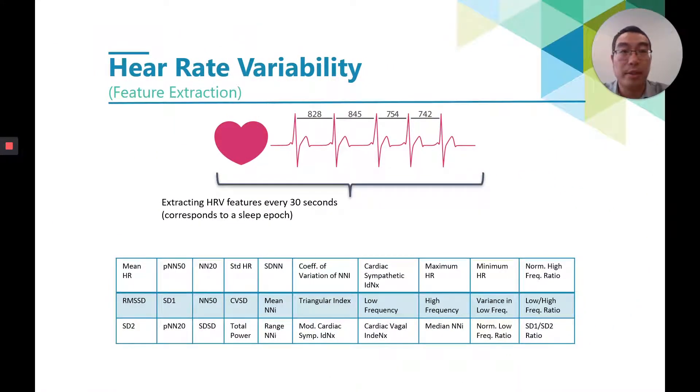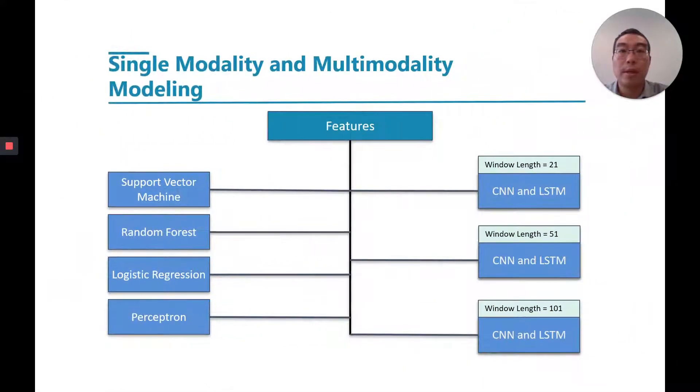For heart rate variability, we extracted the HRV features from the non-overlapped window that includes 30 seconds normal to normal intervals that correspond to one sleep epoch. The extracted features were concatenated for training machine learning methods.